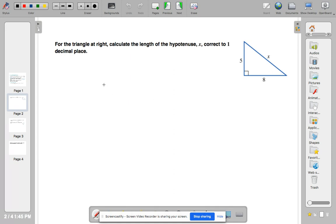Okay, here's a question. For the triangle on the right, calculate the length of the hypotenuse X to one decimal place. So let's write down our formula, C squared equals A squared plus B squared. And let's label our three sides. So C is X, and A will equal 5, and B will equal 8.